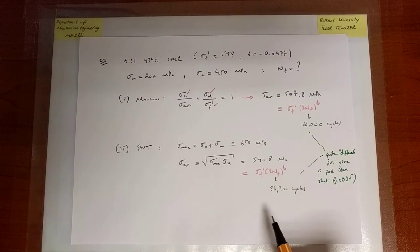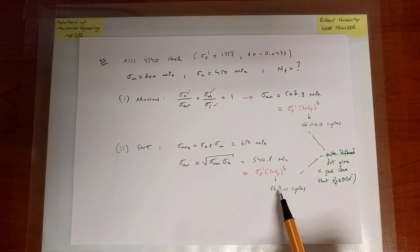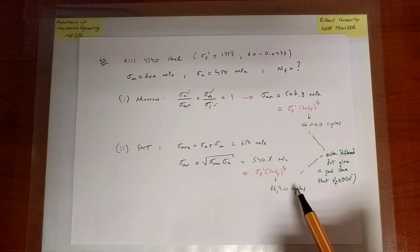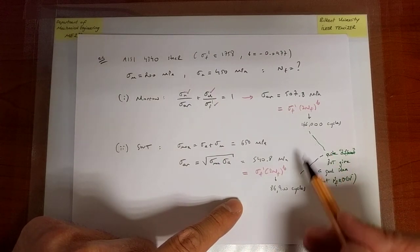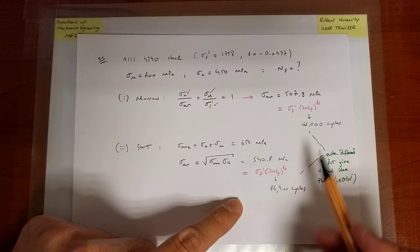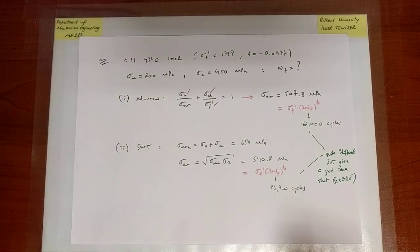Moreover, note that eventually we plot life on a log scale. And on a log scale, these two numbers on a log scale that ranges from 10 to the 1 to 10 to the 7, actually they're two close numbers. So they're not all that different from each other.